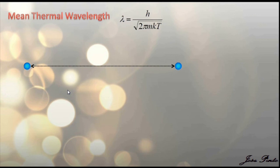When the mean thermal wavelength is much smaller than the inter-particle distance in the gas, then the gas becomes classical. It's a Maxwell Boltzmann gas.